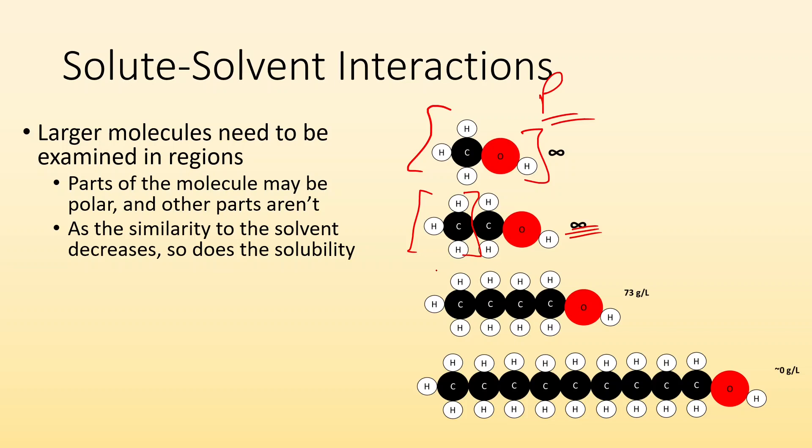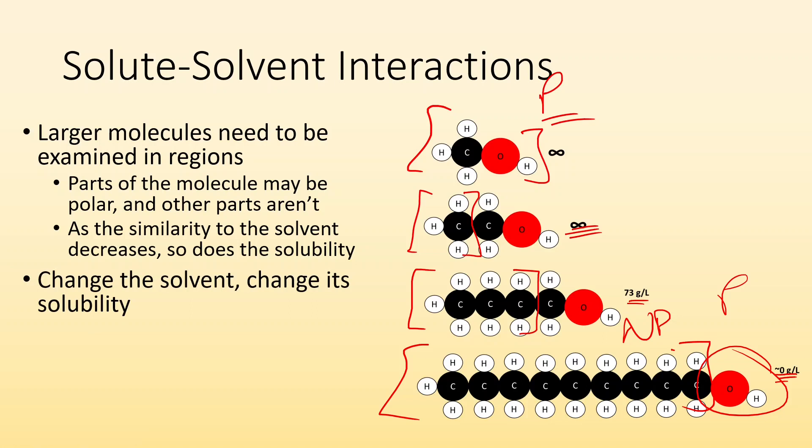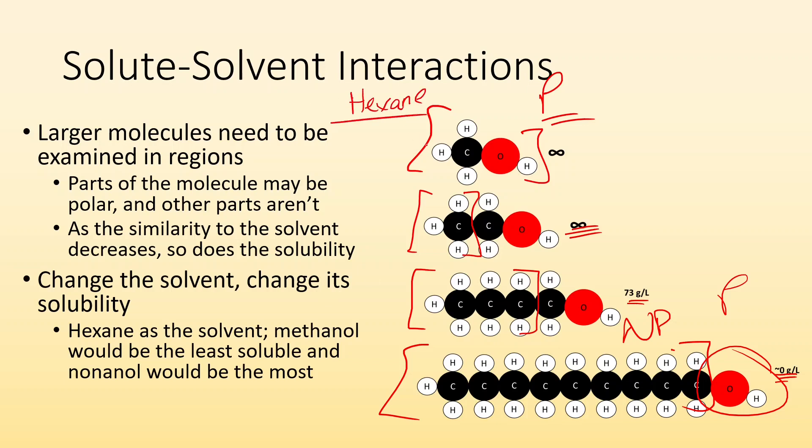But if we keep getting a little bigger, now this non-polar region is starting to predominate the molecule and we see it's still pretty soluble but not infinitely soluble. If we get even bigger, this whole region is really non-polar and we just have a polar end, and the solubility for that molecule is almost nothing. If we change the solvent though, we also change its solubility. Let's say instead of using water we used hexane as a solvent. The solubilities would flip. This first one that's really polar - not soluble. You wouldn't expect that to dissolve in hexane. But the bottom one, that's pretty much entirely non-polar except for that very end, so that's anticipated to be soluble.